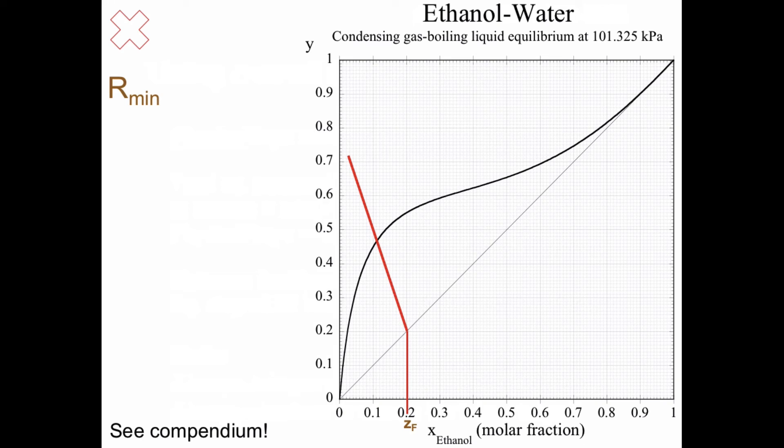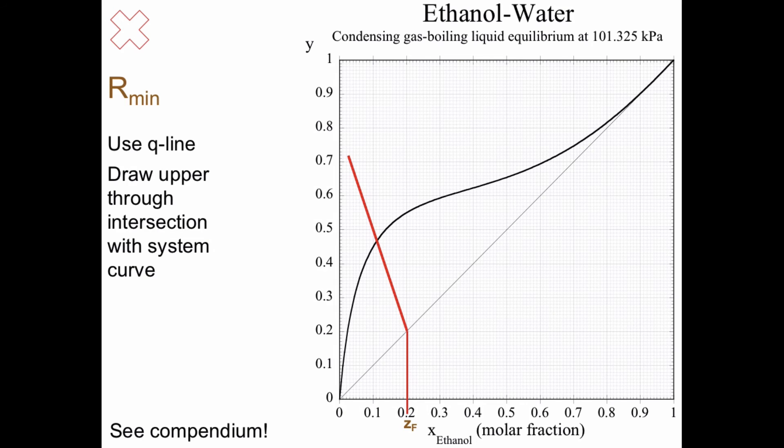We should check the minimum reflux ratio as well. And the q line is very important there. You draw the q line and then you think of the upper operating line. You draw the upper operating line through the intersection with the system curve there, like that. And then you can draw steps.